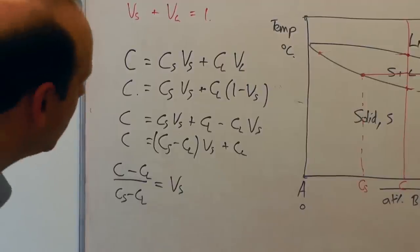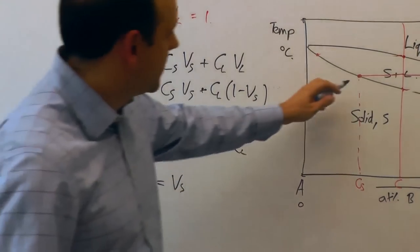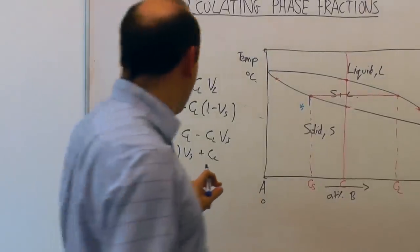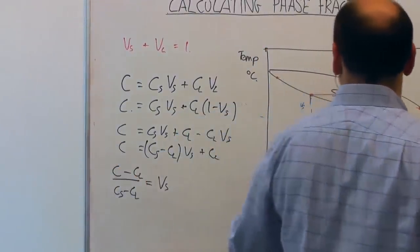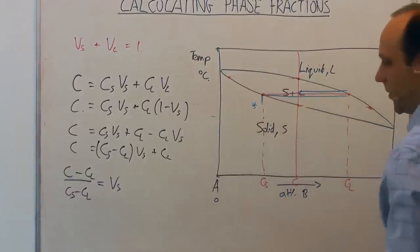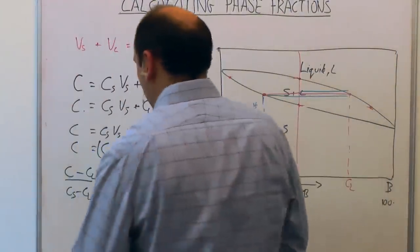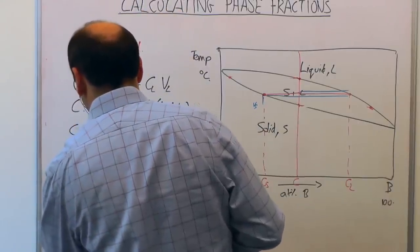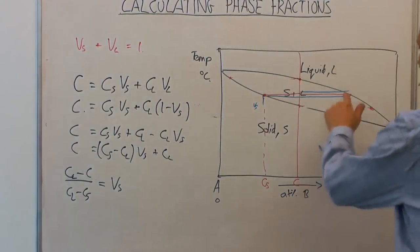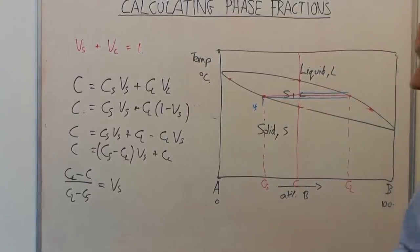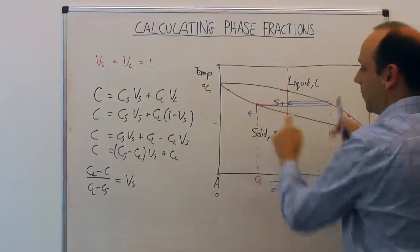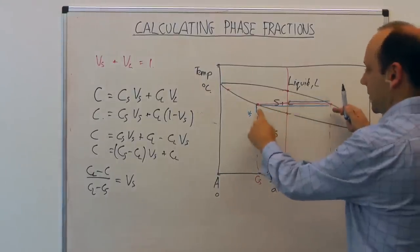So what does that look like on the diagram? The volume fraction of solid equals (Cl − C) over (Cl − Cs). Those are both positive numbers — it's that distance divided by that distance. The easy way to remember this is that if you want the volume fraction of a phase, it equals the opposite little distance — the distance from the alloy composition to the other phase's composition — divided by the whole distance between the two phase compositions.